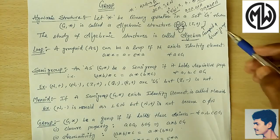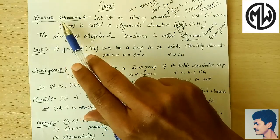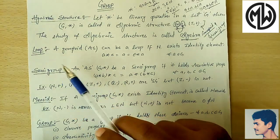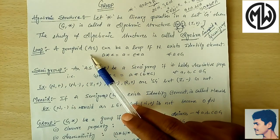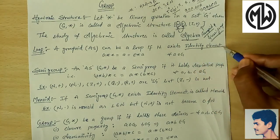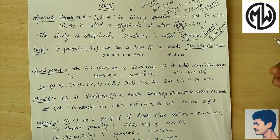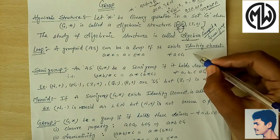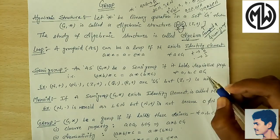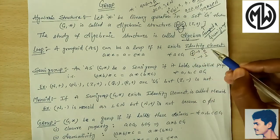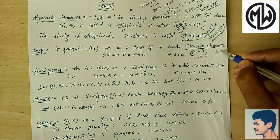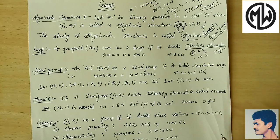An algebraic structure can form a group or can be a group. Next is loop — an algebraic structure can be a loop if it has an identity element. What is an identity element? We have already read this in 12th class. For addition (+), the identity element is zero, and for multiplication (×), the identity element is one. Because adding zero to any number gives back that same number — for example, 5 + 0 = 5. So the identity element for + is zero, and for multiplication it is one.